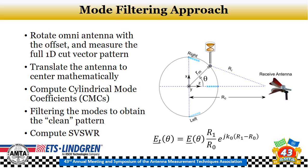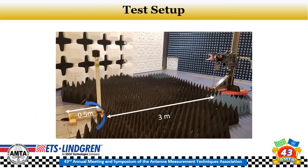After we extract the true antenna pattern, we can see the difference between the perturbed pattern and the antenna pattern after filtering, and from that we can derive the SVSWR. This is a picture of the actual test setup. You can see the transmit antenna — a double-ridged waveguide antenna — at three meters from the front of the quiet zone, and the omnidirectional antenna placed 0.5 meters from the center of the turntable. The turntable rotates and we measure the antenna response between the two antennas at each stop.